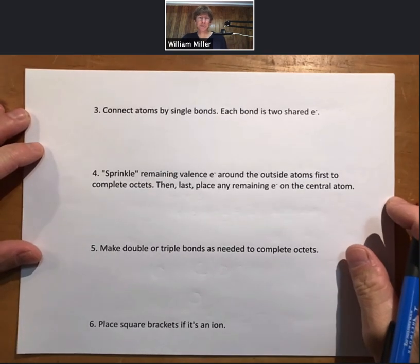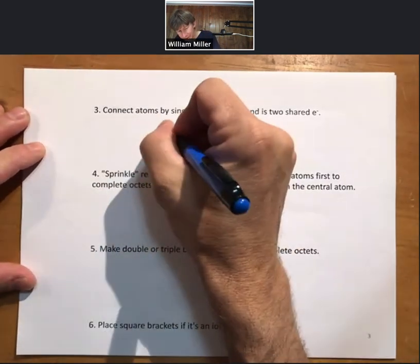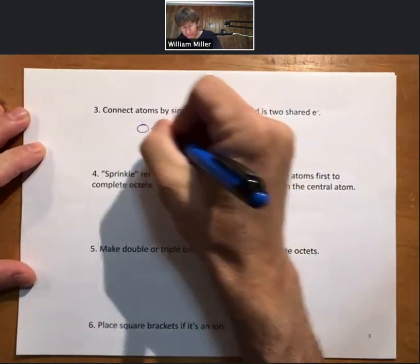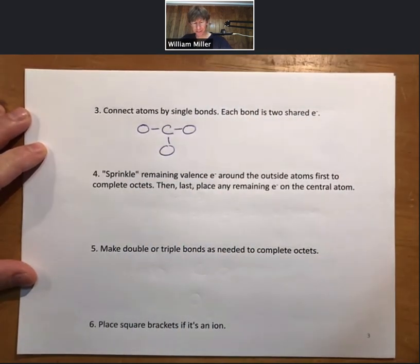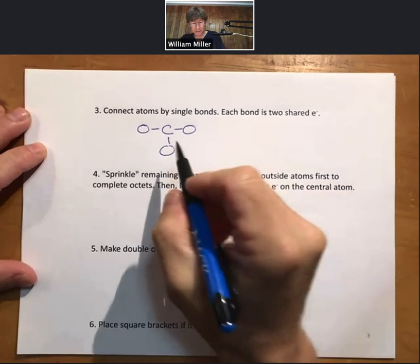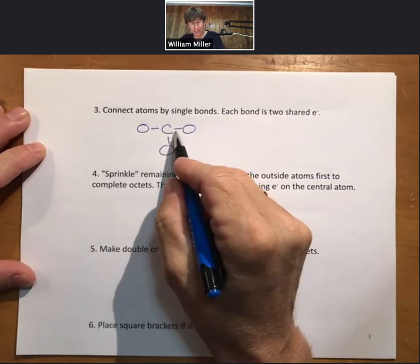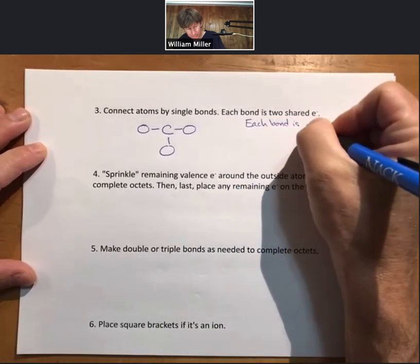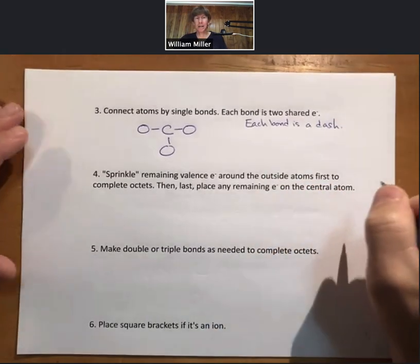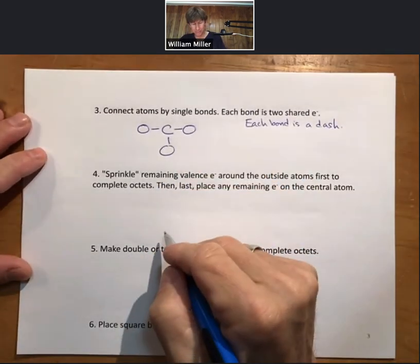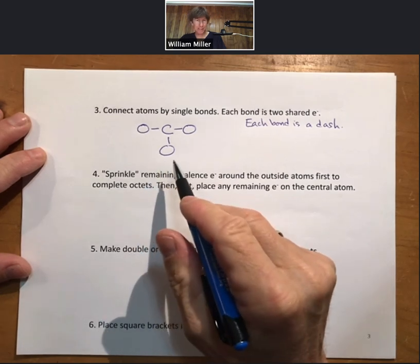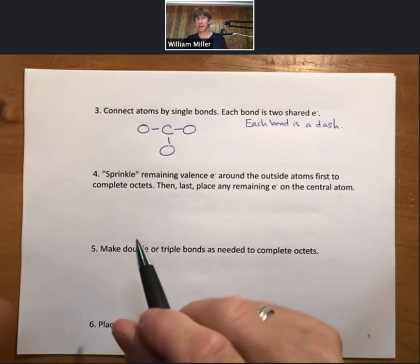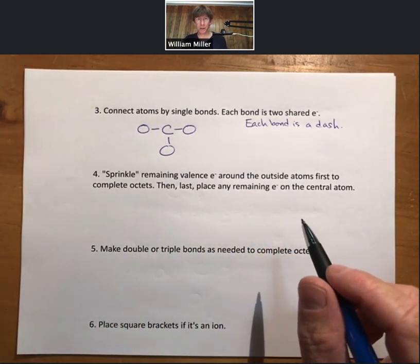Connect atoms by single bonds. Each bond is two shared electrons. Now step three is going to have single bonds. Each bond is two shared electrons. Each bond is a dash, or a hyphen, or whatever—it's a line. Remember, we started with 24 valence electrons to put into this. I do not think of the electrons as belonging to any one atom. I think they belong to the molecule.